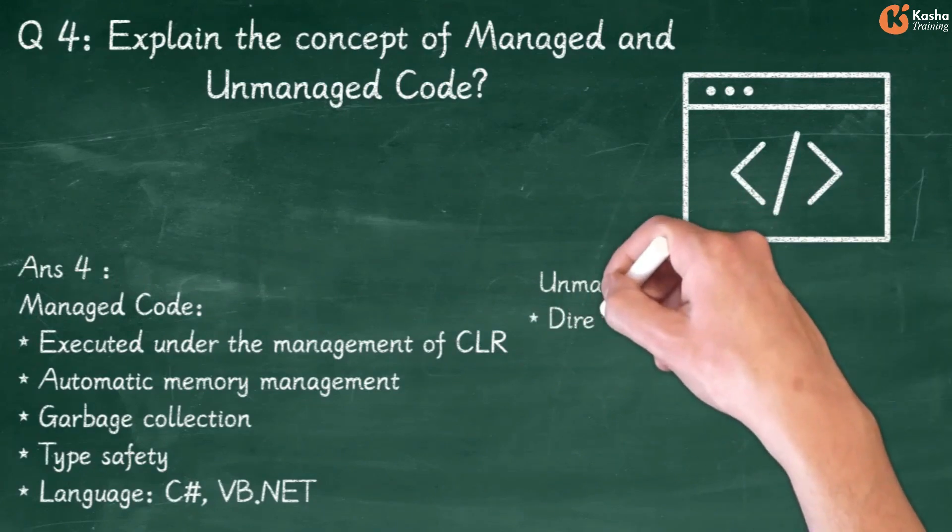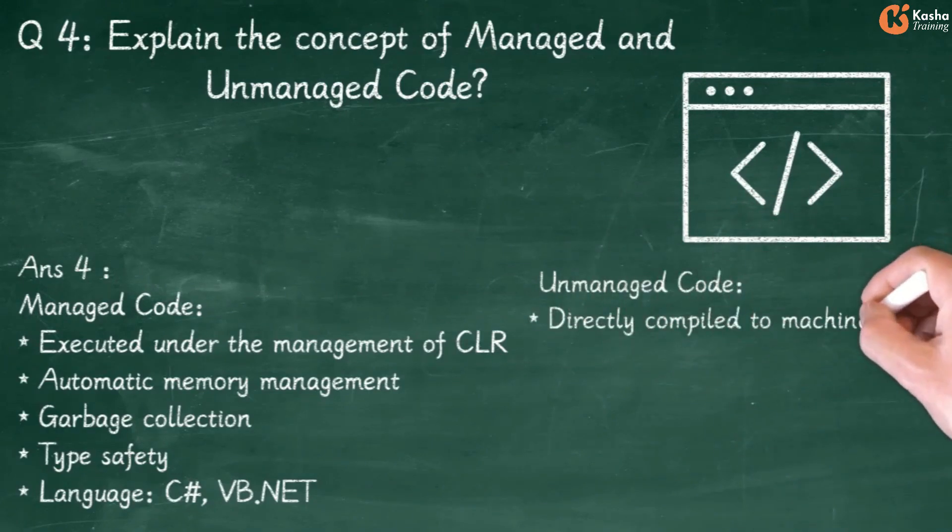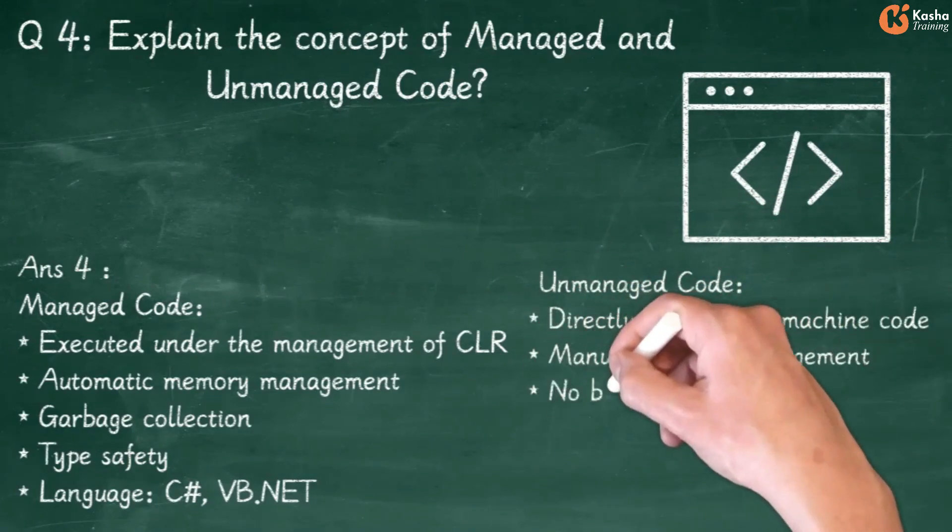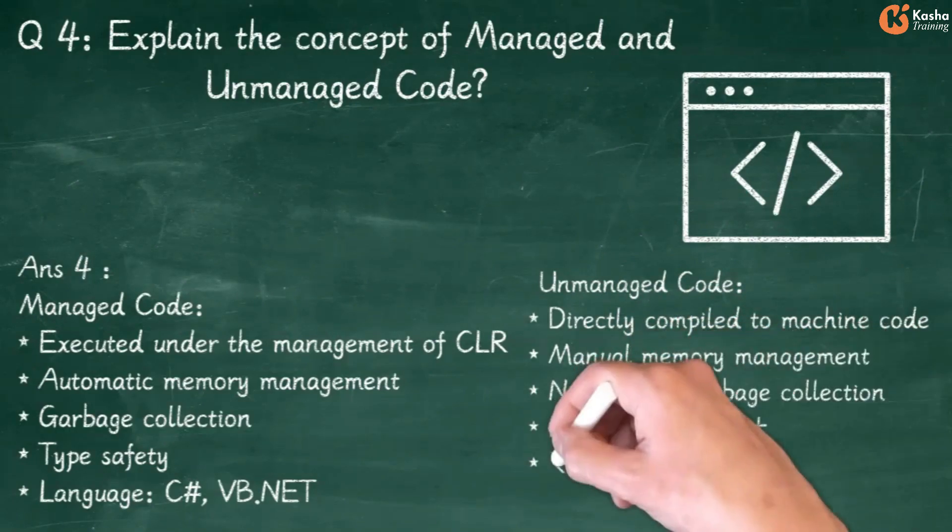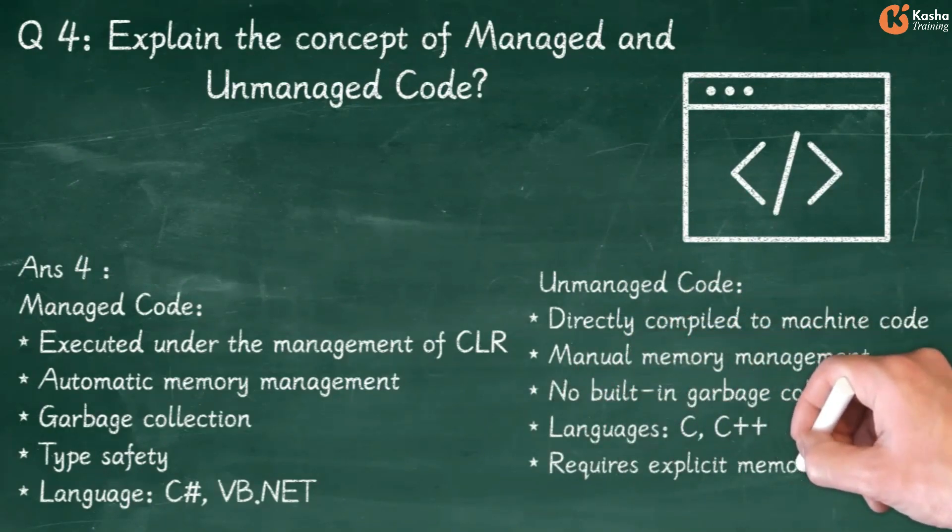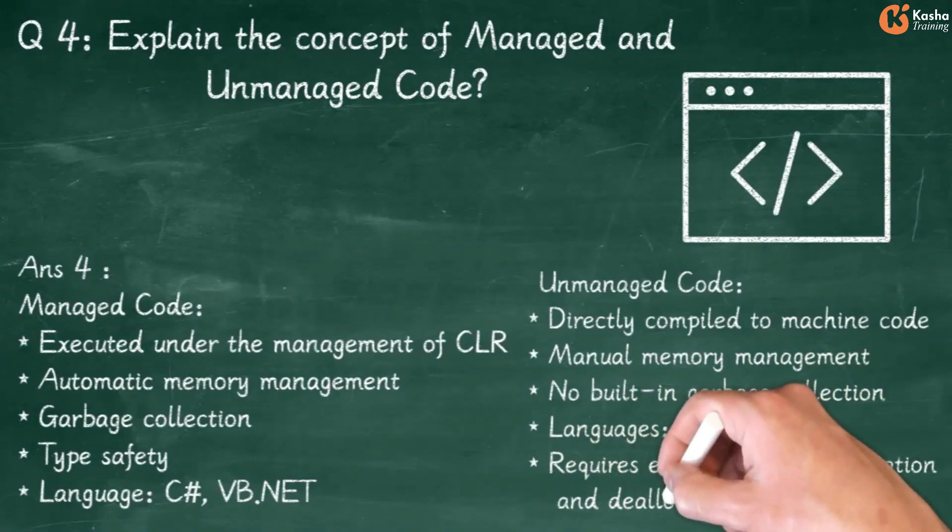Unmanaged Code is Directly Compiled to Machine Code, requires Manual Memory Management, has No Built-in Garbage Collection. Languages include C and C++. It Requires Explicit Memory Allocation and Deallocation.